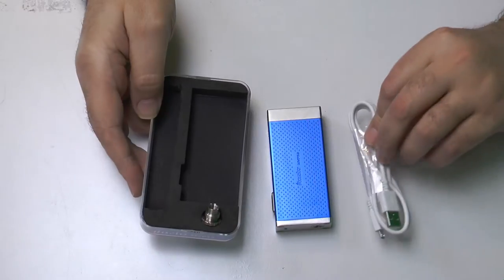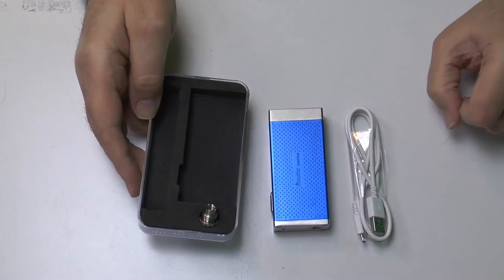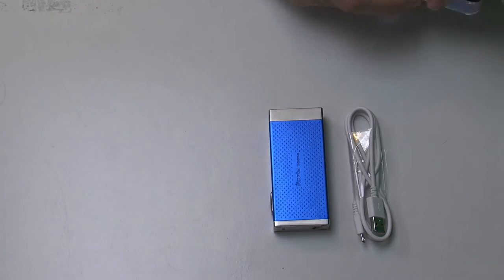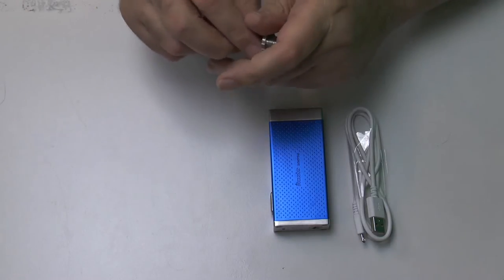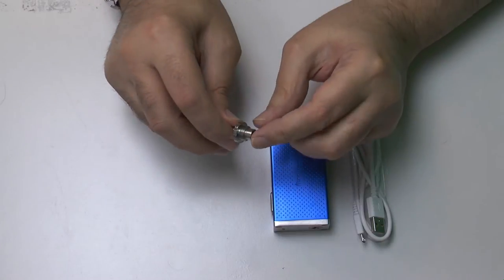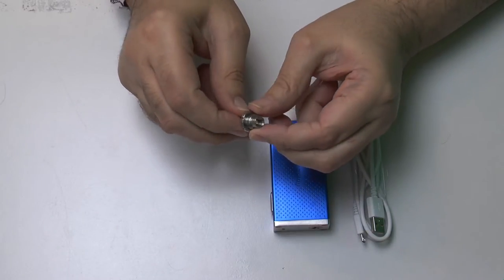You have a USB to micro USB cable. And you also get, in a departure from the usual with the MVPs, an Ego adapter. So that's a 510 to Ego adapter.